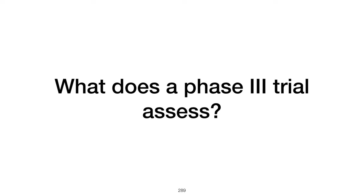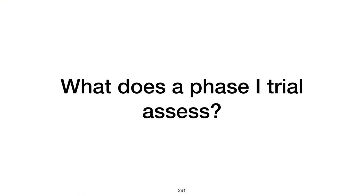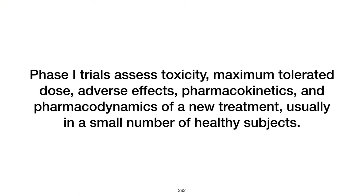What does a Phase III trial assess? A Phase III trial assesses treatment efficacy and safety in a large sample of affected patients, comparing the new treatment to standard treatments or placebo to evaluate long-term or rare adverse effects, determine overall benefit, and guide regulatory approval for commercial use. A Phase I trial assesses the toxicity, maximum tolerated dose, adverse effects, pharmacokinetics, and pharmacodynamics of a new treatment, typically in a small number of healthy subjects, to establish safety and dosage guidelines.